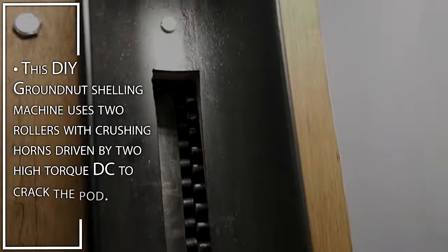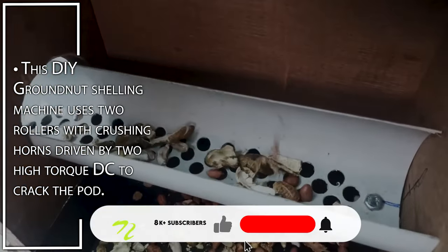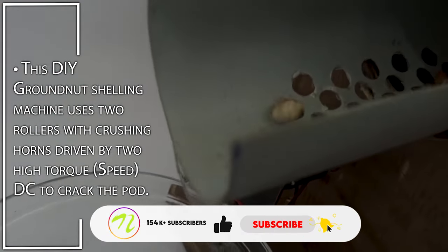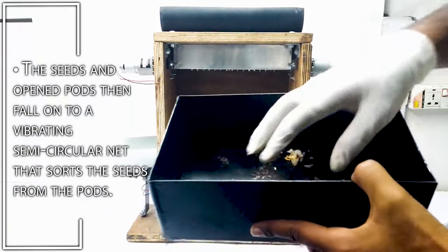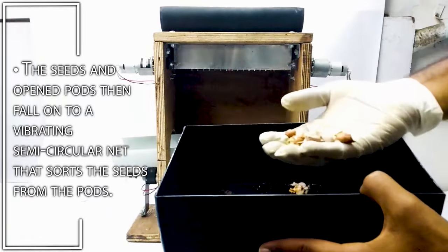This DIY groundnut shelling machine uses two rollers with crushing horns driven by two high-speed DC motors to crack the pod. The seeds and open pods then fall onto a vibrating semicircular net that sorts the seed from the pods.